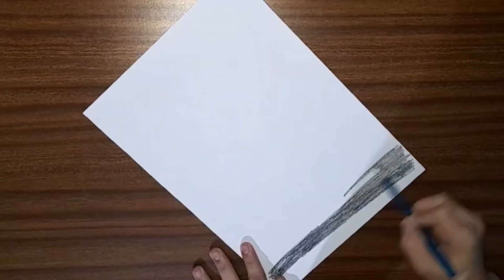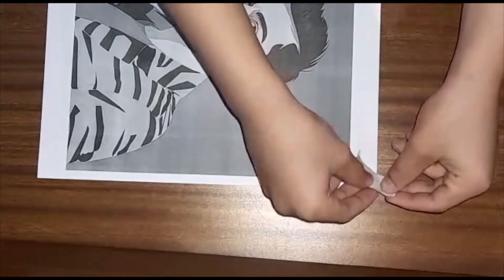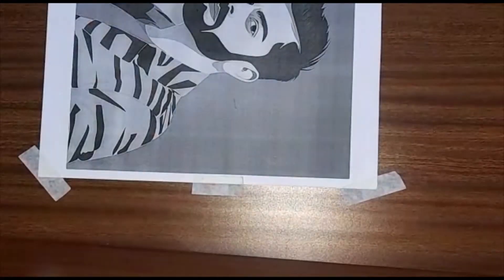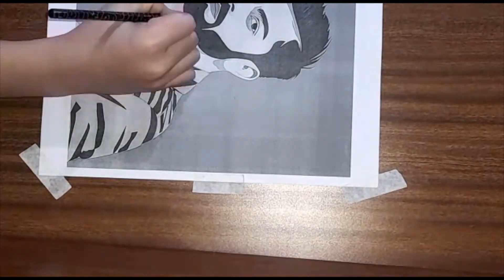First, scribble on the back side of the xerox. Once you've done the scribbling, place that image on the blank paper and add some masking tape or any heavy object so that it doesn't move. Now you can trace as shown in the video.